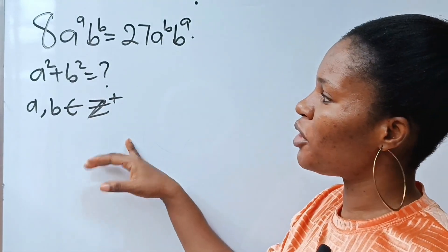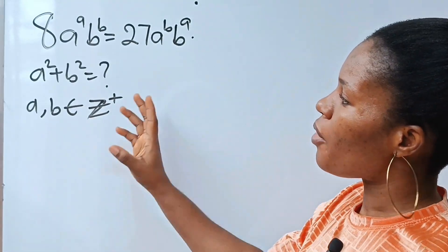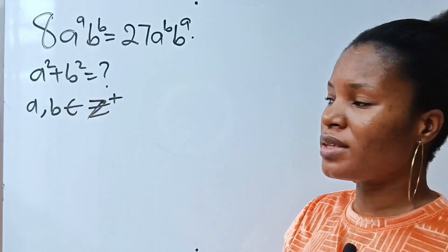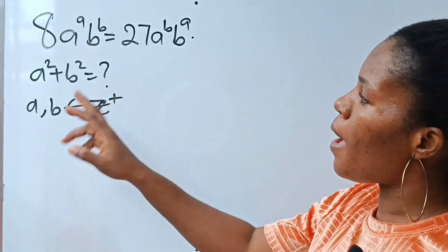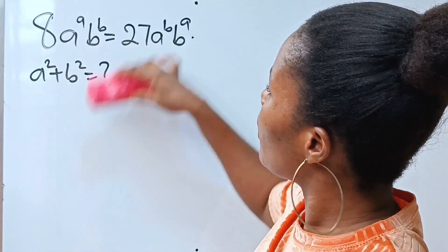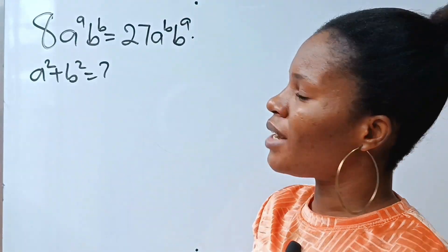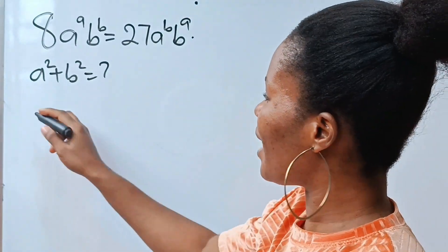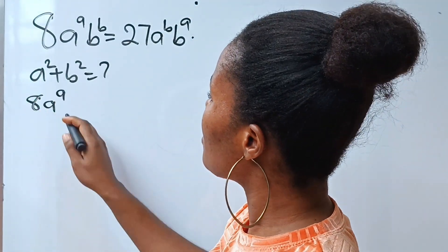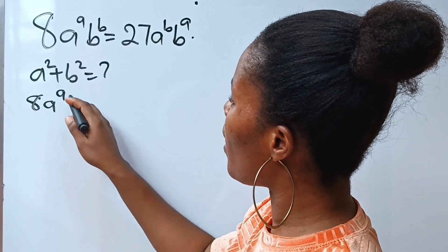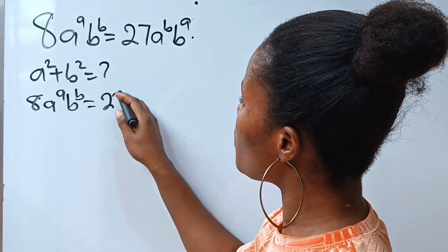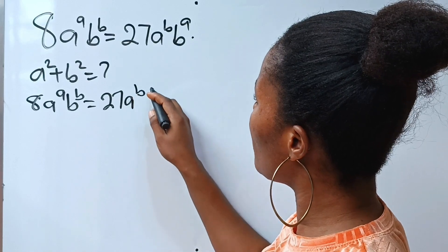This Harvard entrance examination requires that we find the value of a squared plus b squared, where a and b are positive integers. So, a to the power of a times b to the power of b is equal to 27 times a to the power of b times b to the power of a.